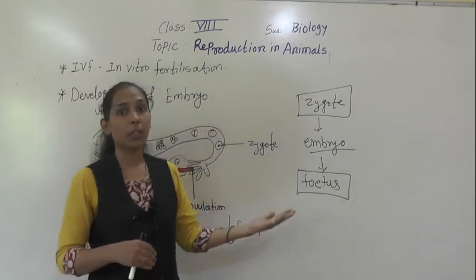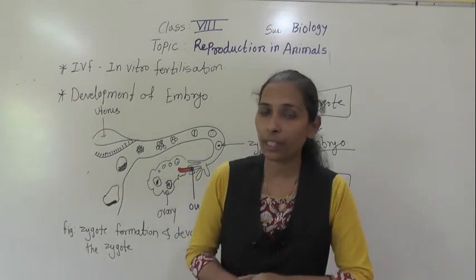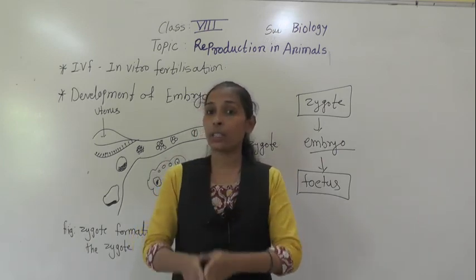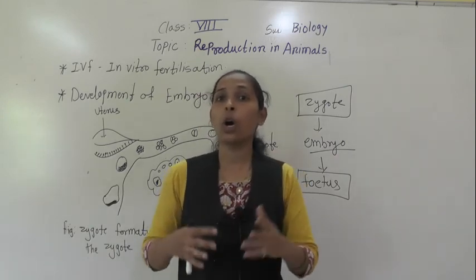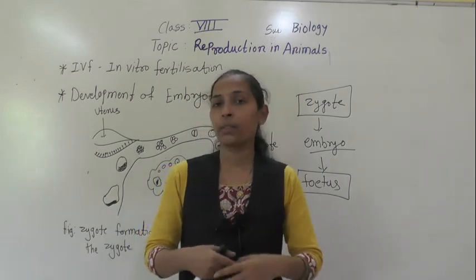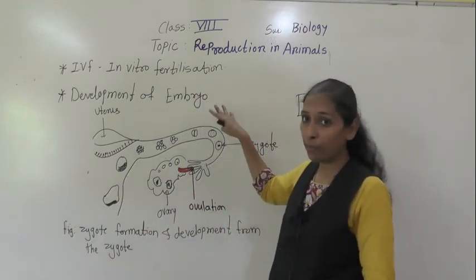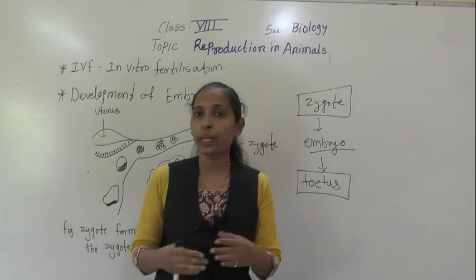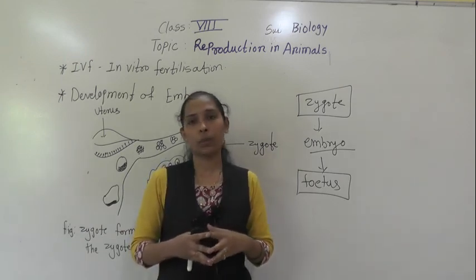In this way, new baby chicks are produced in the hen. The hen has internal fertilization but the babies come out from eggs — that means the hen is an oviparous animal. While mammals like cows, dogs, and human beings give birth directly to their young ones — that is why they are called viviparous. This is all about the development of the embryo. We will stop here today and meet in the next video for the next point. Thank you.